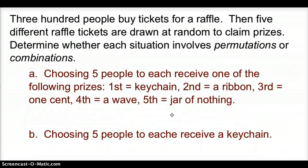Let's try one more example with permutations and combinations. We are going to label these two to see if they are permutations or combinations. 300 people buy tickets for a raffle. Then, five different raffle tickets are drawn at random to claim prizes. Determine whether the situation is a permutation or a combination. Choosing five people to each receive one of the following prizes: a keychain, a ribbon, one cent, a wave, a jar of nothing. Does order matter? If I got first, would I be different than who got second? Yes, because I would get the awesome keychain, the person behind me would have got second, or a ribbon. Well, what if Bob finished ahead of me? Bob would have then got the keychain, and I would have got the ribbon. So, does order matter? Yes, order matters. So, what would this be? This would be a permutation.